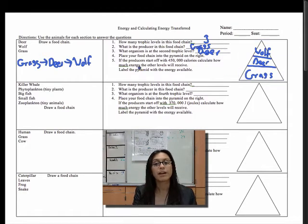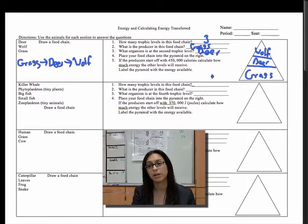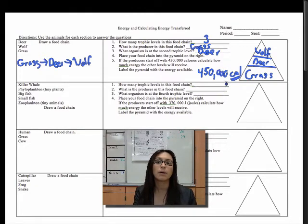All right, number five, if producers start off with 450,000 calories, calculate how much energy the other levels will receive. Label the pyramid. So starting with the grass, the producer, 450,000 calories. Don't forget to put your units. It's very important that you put your units, not just now, but in chemistry next year. If you don't put your units, you are going to be marked down. Chemistry was the first class I ever received an F on a test in high school. I was an honors AP student. I was hyperventilating, about ready to pass out.